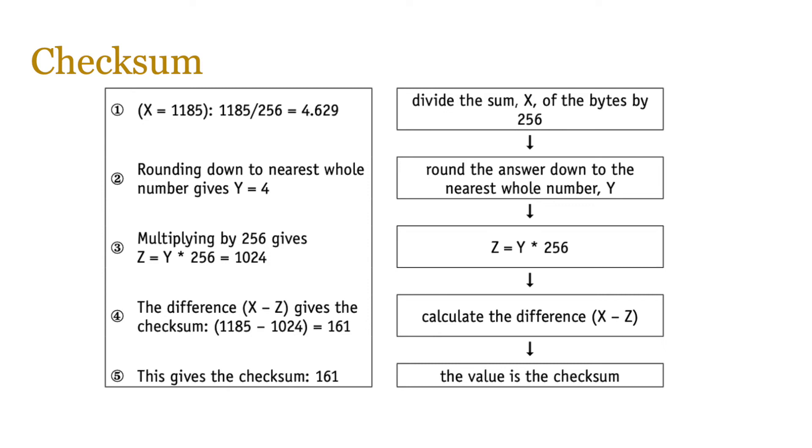So 256 times 4 is 1024. We subtract this number from the original, so 1185 minus 1024, which gives us 161. And since this number is less than 255, this number becomes the checksum value. So it's a clever way of taking big totals and reducing them down to fit into one byte.